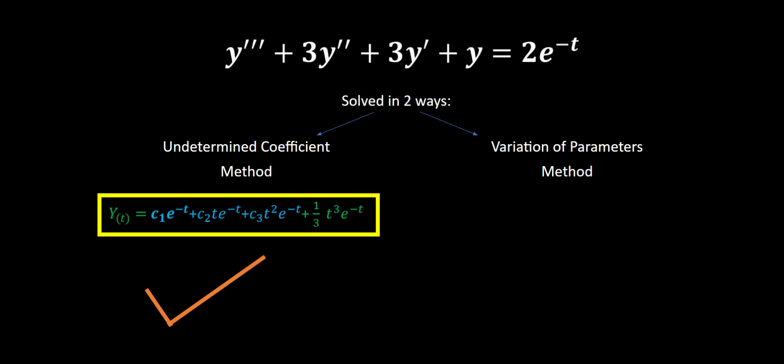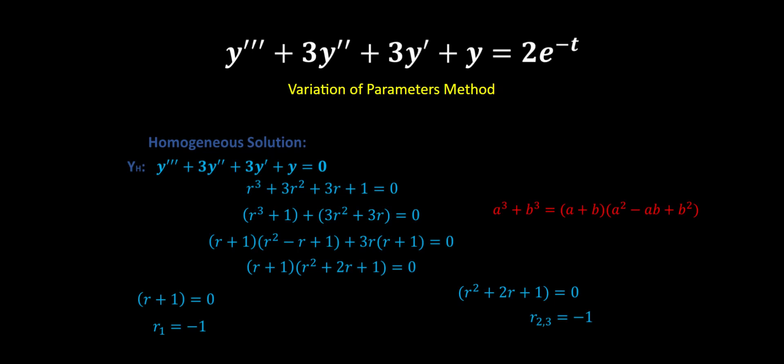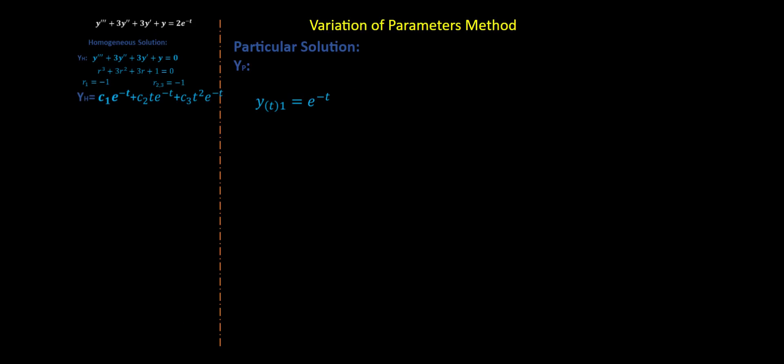Now, as we said, we're going to start all over again and solve the same problem, but this time with the variation of parameters method. The homogeneous solution starts exactly the same way — it's the same slide as before — arriving at the same three roots R1, R2, and R3, all equal to negative one. For the particular solution, we're going to work on our Wronskian, which is a determinant. We'll need the three homogeneous solutions found earlier.